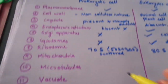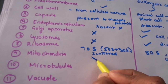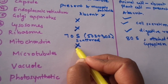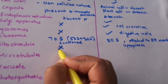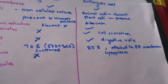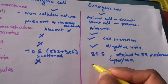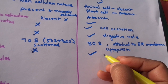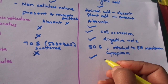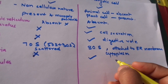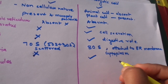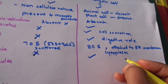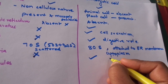Mitochondria is absent in the case of prokaryotic cells and present in the case of eukaryotic cells. It is also known as the powerhouse of the cell and is concerned with cell respiration.